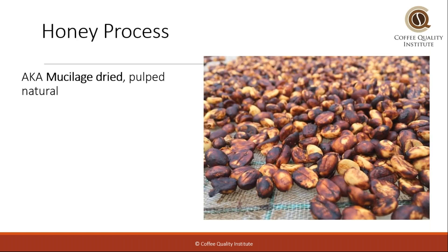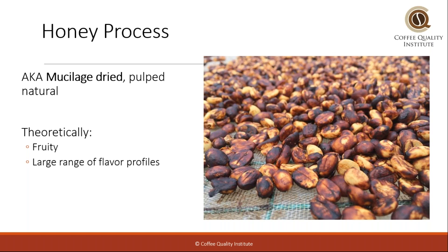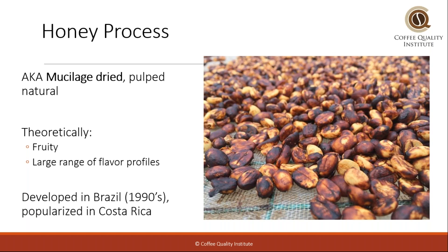Next is honey. Honey is also known as mucilage-dried because it's dried with the mucilage on. It's also known as pulp natural. The flavor profile of honey coffees is theoretically fruity, but there's really a large range of profiles. The honey process can mimic a washed profile and it can also mimic a natural profile — it just depends on how that coffee is processed. Some people say that you take more mucilage off and it more closely resembles a washed coffee; you leave more mucilage on and it more closely resembles a natural coffee. That can be true, but it's not always true. This was developed in Brazil and then also later popularized in Costa Rica, mainly due to the Costa Ricans trying to deal with some water conservation regulations.